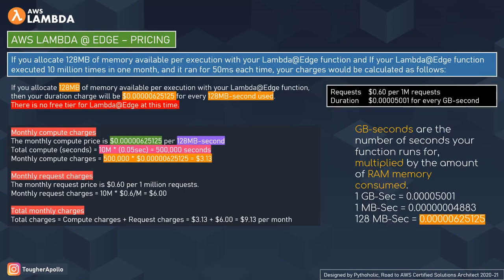Now let's talk about the pricing model for AWS Lambda at Edge. First, there is no free tier for Lambda at Edge. Charges are applicable based on the total number of requests executed across all your functions. Lambda at Edge counts a request each time it starts executing in response to a CloudFront event globally. Request pricing is $0.60 per 1 million requests, which is $0.0000006 per request. Duration is calculated from the time your code begins executing until it returns or otherwise terminates.